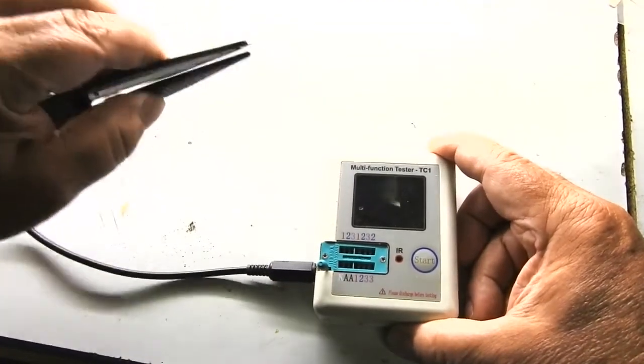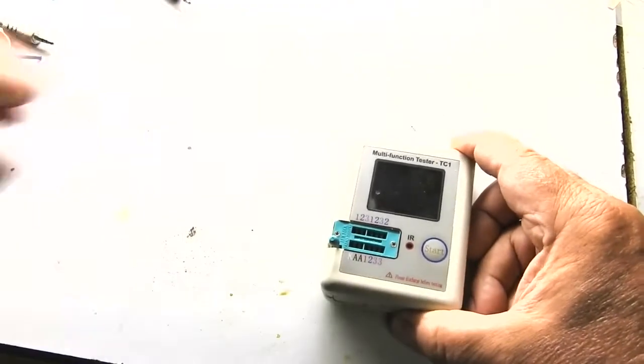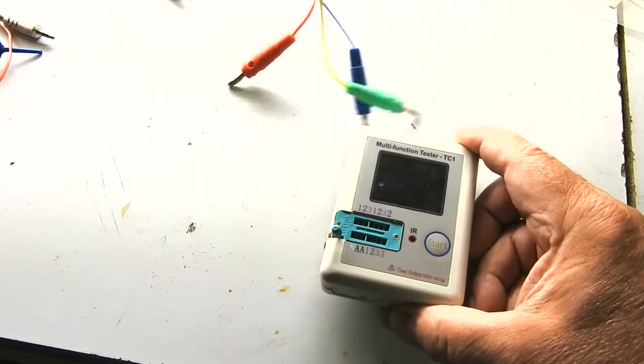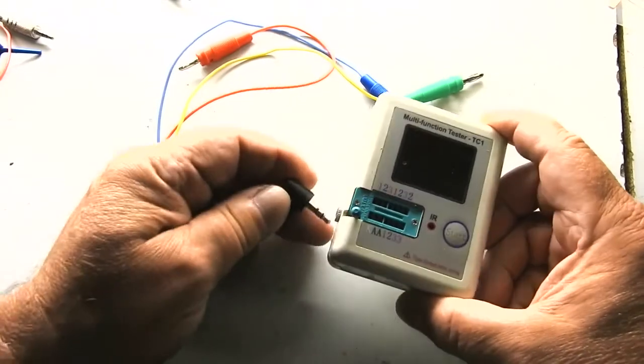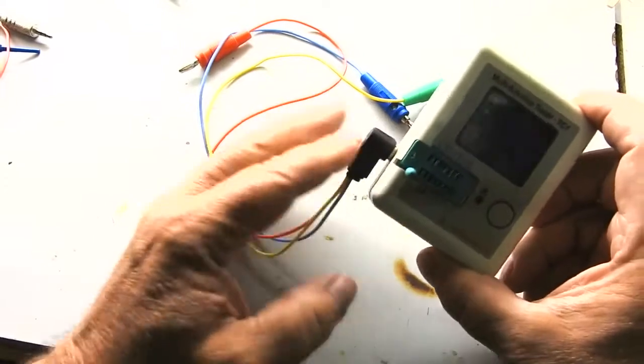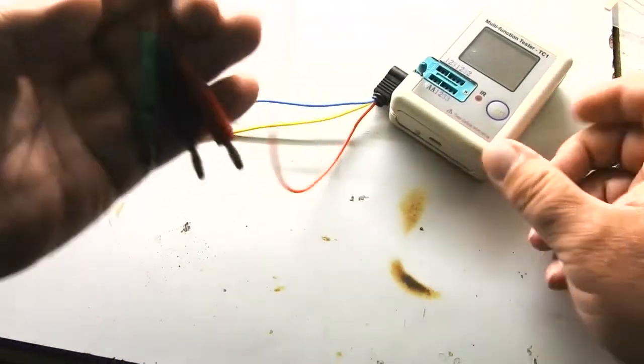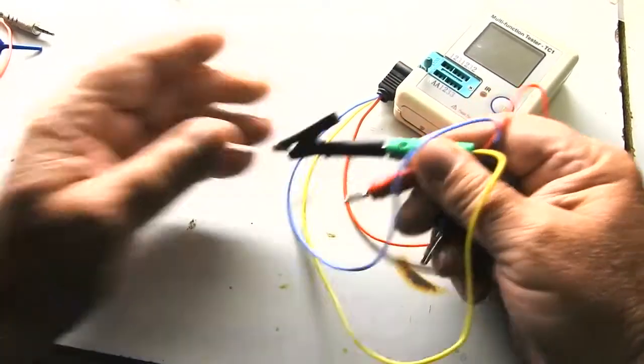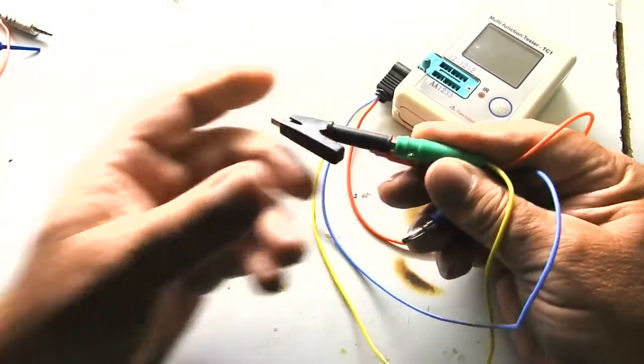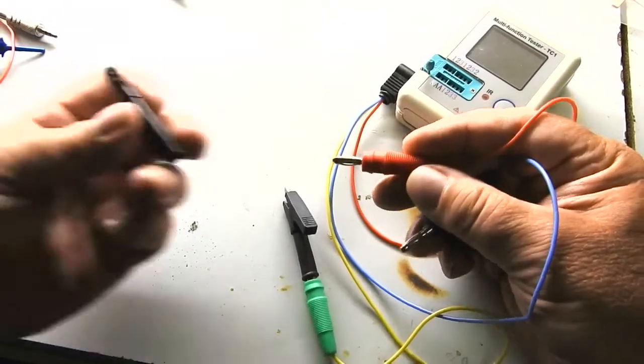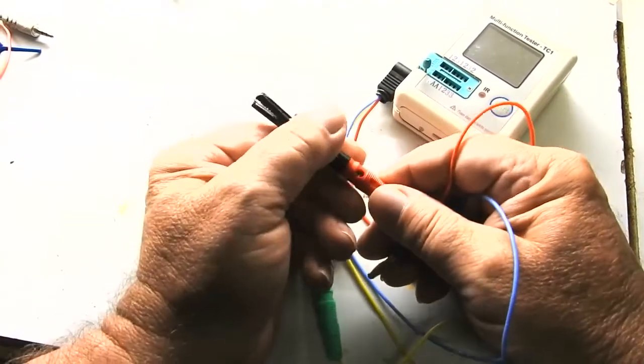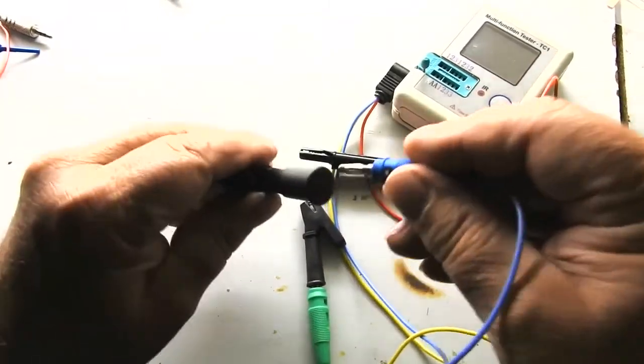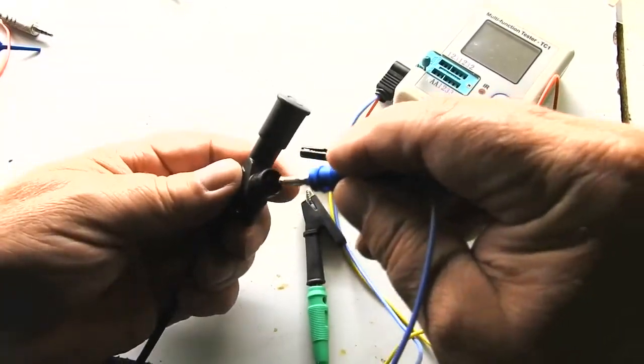These tweezer things are quite cheap on eBay, but probably the most useful one is some just banana plugs. You can get right angle plugs, probably a bit more convenient, but with the banana plugs you can use alligator clips like that for those hard to reach spots.